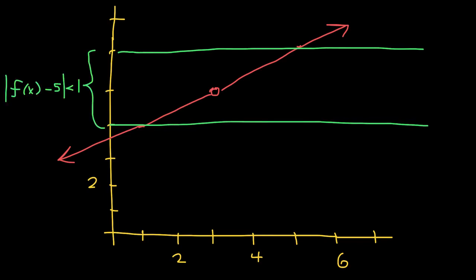That is to say, the distance between all of your function values and your limit 5 is less than one unit. Find a distance that your x values have to be from 3 that will guarantee that the function values will be within one unit from the limit.